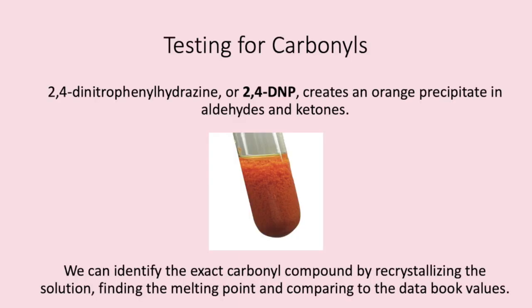We can identify a carbonyl group by using 2,4-dinitrophenylhydrazine. In the exam you can refer to it as 2,4-DNP, which is a lot easier to remember. A positive result should show an orange precipitate in aldehydes or ketones, as shown in the picture. We can identify the exact carbonyl group by recrystallising the orange precipitate, finding its melting point and comparing to the data book values.